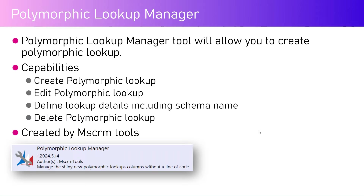Polymorphic Lookup Manager allows you to create polymorphic lookups on the fly using the UI. Its capabilities include creating a polymorphic lookup, editing one — for example if you created a lookup for five tables and later want to change it to three or seven tables — and deleting a polymorphic lookup. This tool is created by mscrm tools, and it is really helpful for developers using Dynamics 365 or Power Platform solutions.